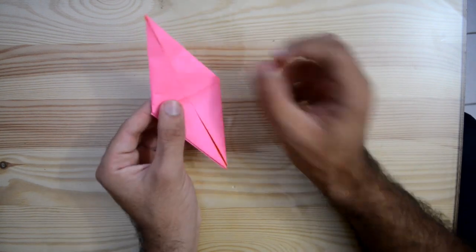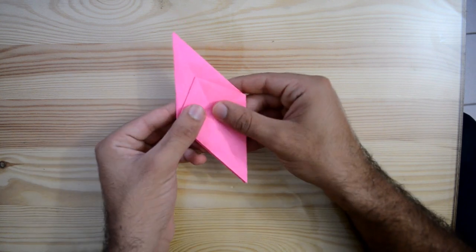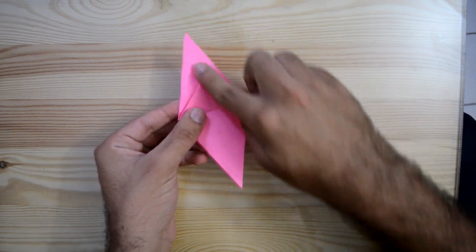Now for this one, I'm going to turn to this side of the paper and I'm going to fold on the center line.